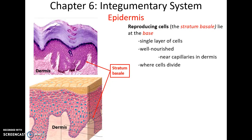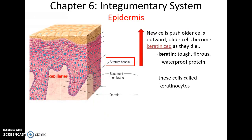The first layer of the epidermis is called the stratum basale. The stratum basale is a single cell layer thick and is well nourished by capillaries that are in the dermis located near the epidermis. This is where all cell division for the epidermis occurs. As cells divide, they get pushed up above the stratum basale, and they push the cells above them further up, and those push the ones above them further up, so that slowly over time cells migrate from the lowest layer all the way up to the most superficial layer.